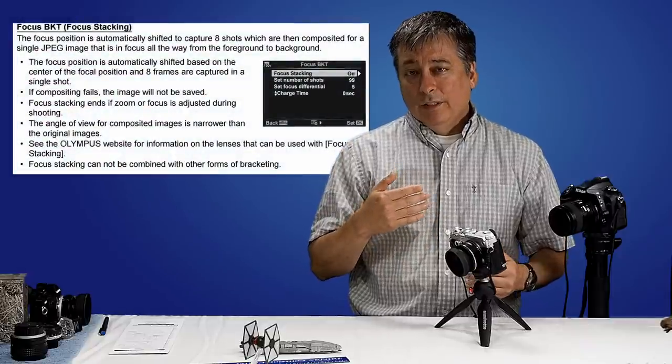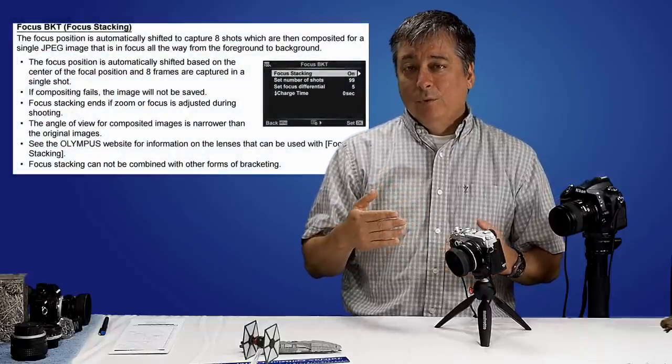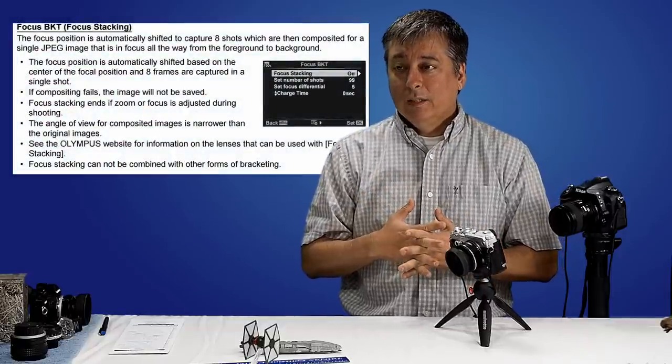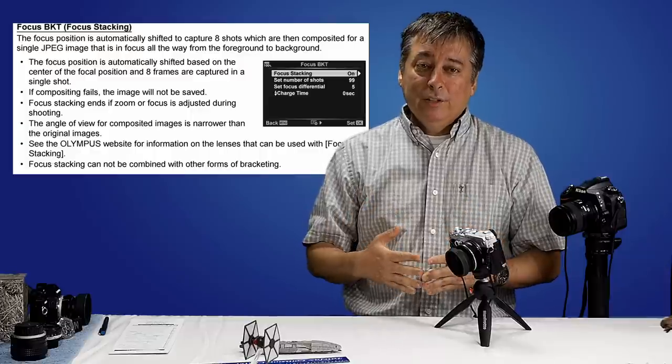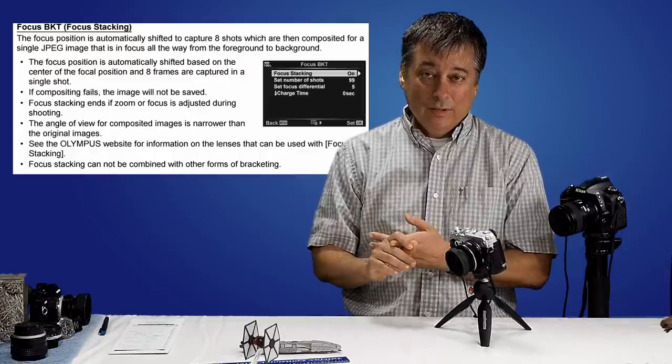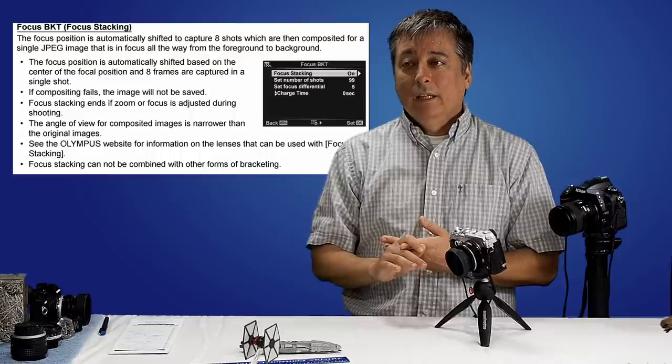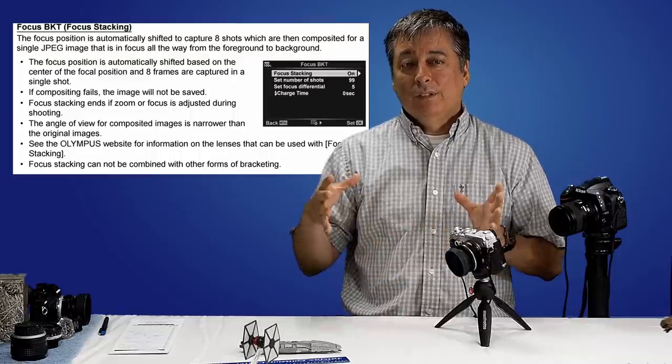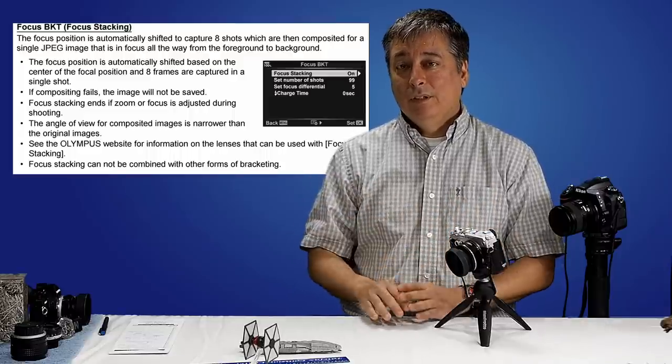Some of the Olympus cameras have the focus stacking built in, and that's a nice feature, but it has a couple limitations. You can only take eight pictures of a subject and it stacks them together, and then the final image is a JPEG.